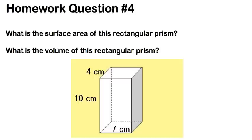The last homework question has two parts: you need to find the surface area and the volume of this rectangular prism. Remember they're very different — surface area is the area of the outside, and volume is how much goes inside. Have a nice night and we will see you tomorrow.